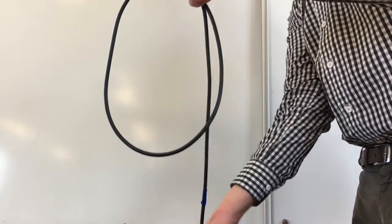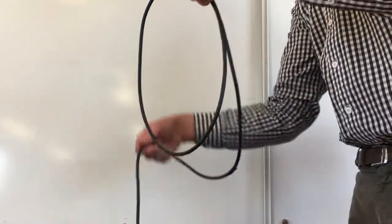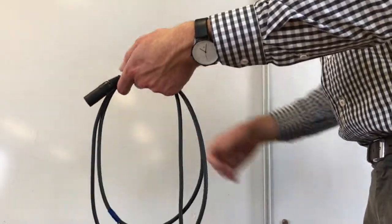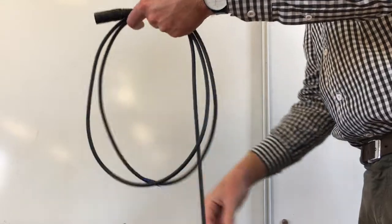Then hand facing down, thumb towards myself, same thing, dropping it over my fingers. There we get two loops. Step one, step two, step one, step two.